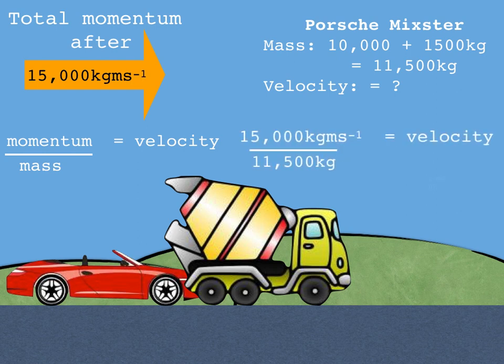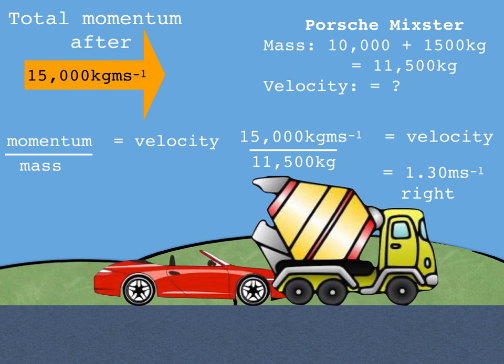So if we pop some numbers into that we have 15,000 kgm/s divided by 11,500 kg gives us 1.30 meters per second to the right. That's to three significant figures. And notice I've put to the right there because our momentum before was to the right so the velocity afterwards is going to be to the right as well.